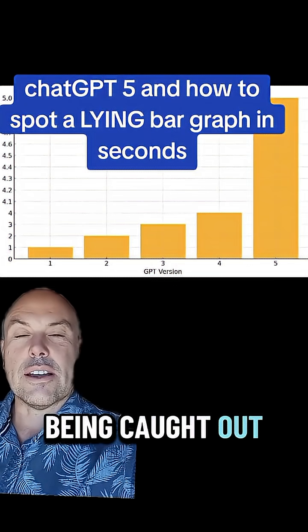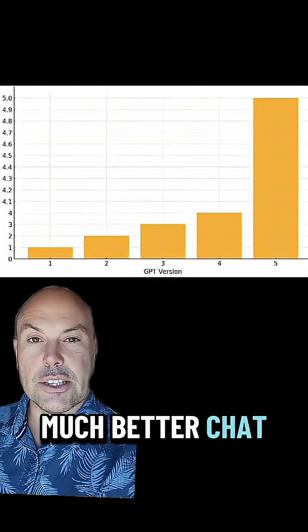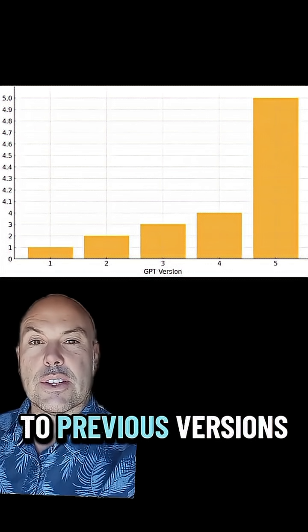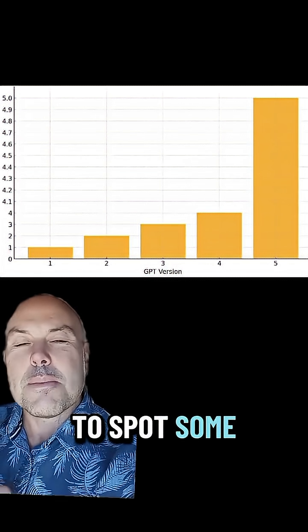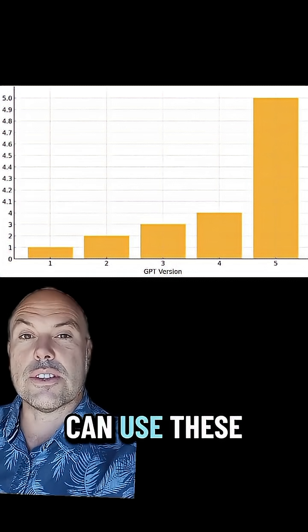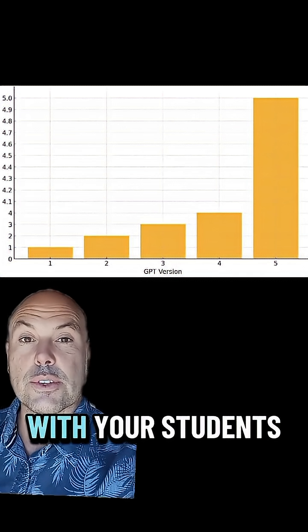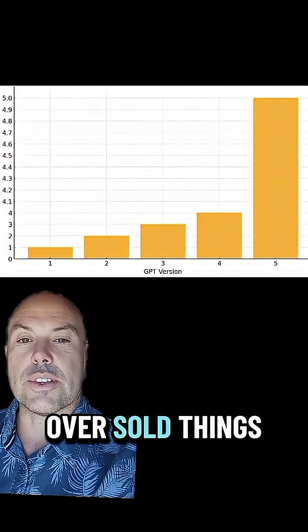In the wake of OpenAI being caught out using some terrible bar graphs to show how much better ChatGPT 5 is compared to previous versions, this video will show you how to spot some incorrect or potentially misleading bar graphs. Then you can use these examples and ideas with your students as well so that they're not being caught out or being oversold things.